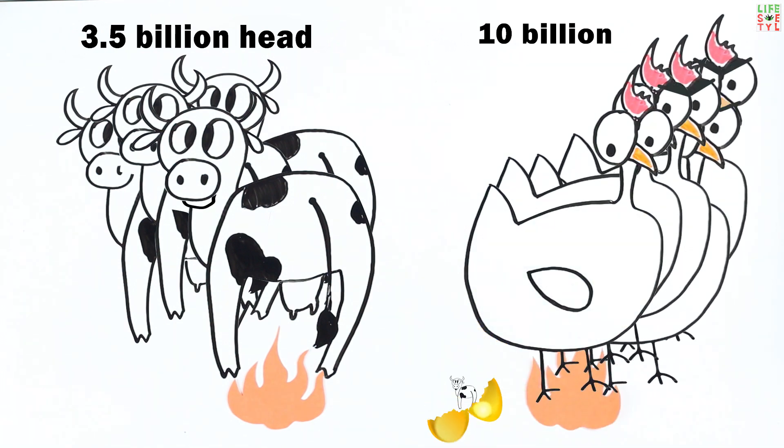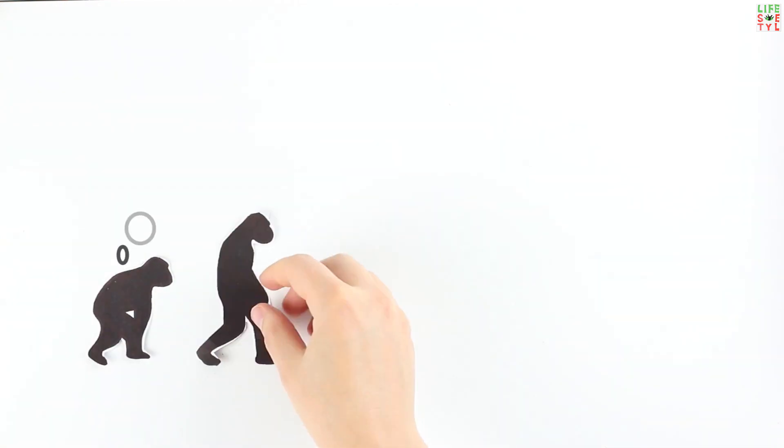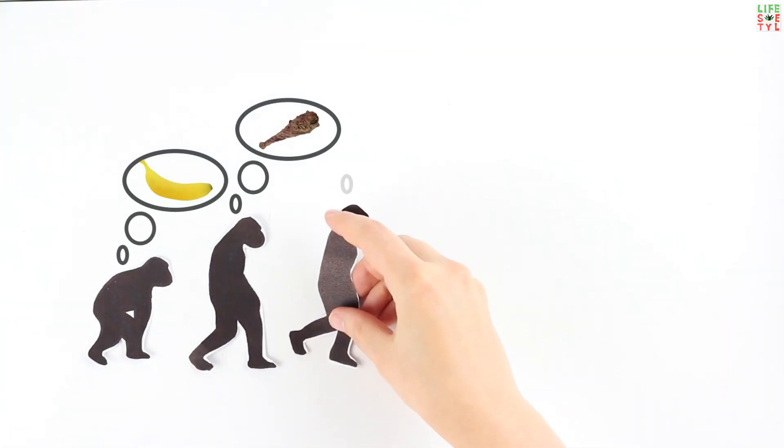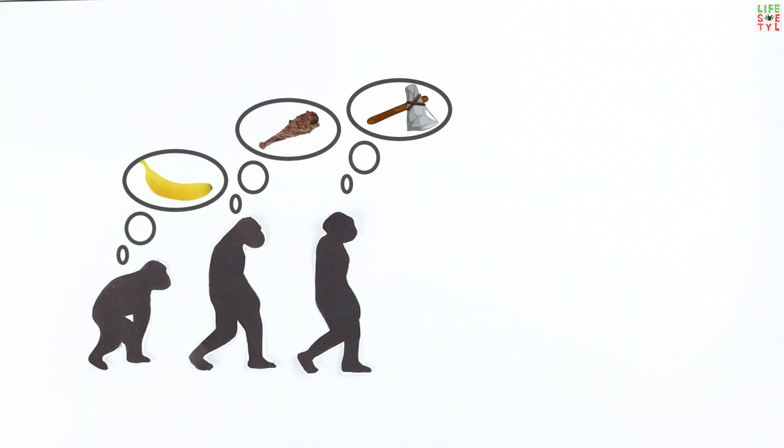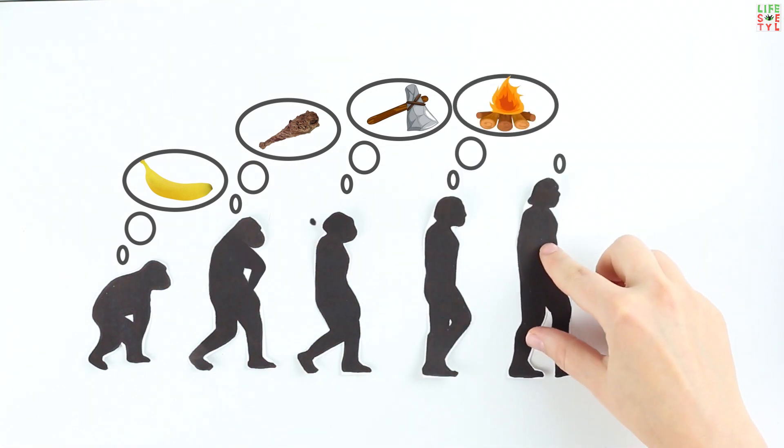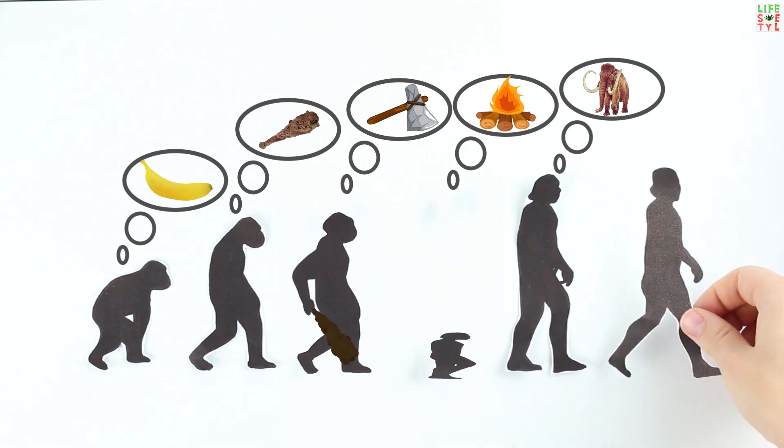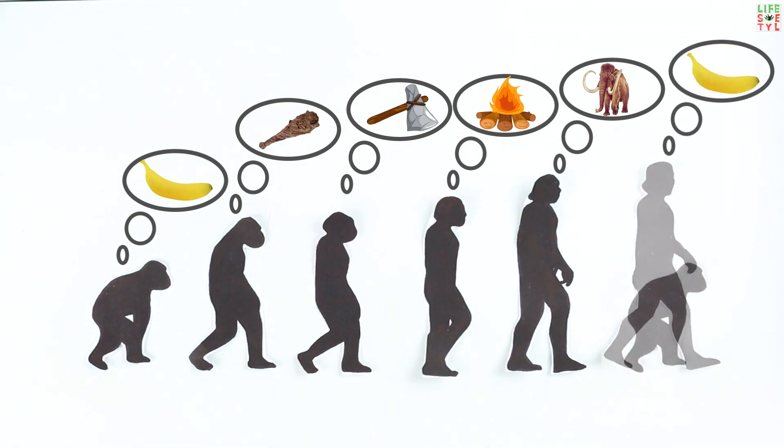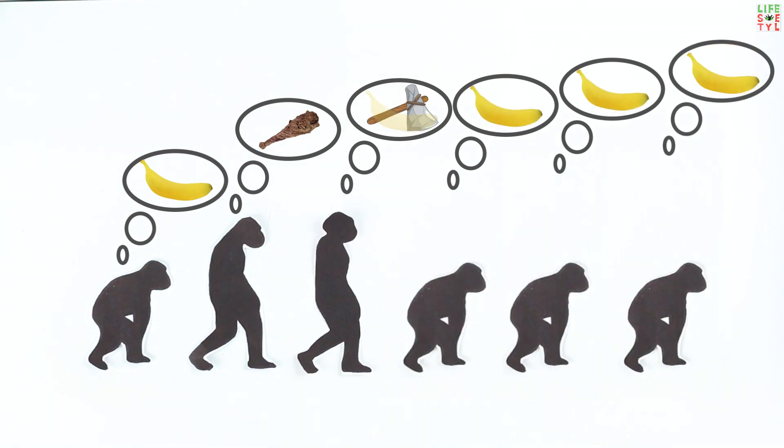Many scientists believe that monkeys evolved into man mainly due to the transition to eating meat. They had to become initiative to create tools for hunting and master fire for cooking meat. But if vegetarianism becomes universal, will evolution reverse and turn us back into monkeys?